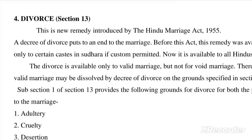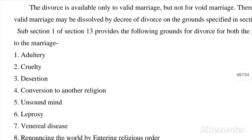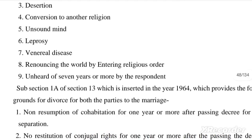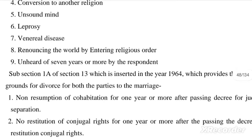Under section 13, the grounds for divorce for both parties are: adultery, cruelty, desertion, conversion to another religion, unsound mind, leprosy, venereal disease, renouncing the world by entering a religious order, and not having been heard of as being alive for seven years or more by the respondent.